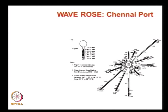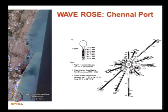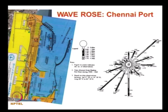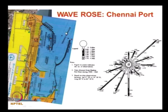Now we will see the Chennai port satellite imagery. The satellite imagery shows the orientation of breakwaters, and to aid understanding, I am showing the layout picture. The north is oriented here. The entrance channel direction is between north-north-east and north-east.